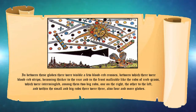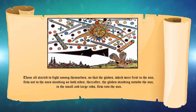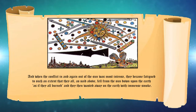Between the crosses there were blood-red strips, becoming thicker to the rear, and in front malleable like the rods of reed grass, which were intermingled. Among them two big rods, one on the right, the other to the left, and within the small and big rods there were three, also four and more globes. This all started to fight among themselves, so that the globes which were first in the sun flew out to the ones standing on both sides. Thereafter, the globes standing outside the sun, in the small and large rods, flew into the sun. Besides, the globes flew back and forth among themselves and fought vehemently with each other for over an hour. And when the conflict in and out of the sun was most intense, they became fatigued to such an extent that they all fell from the sun upon the earth as if they all burned, and then they wasted away on the earth with immense smoke.